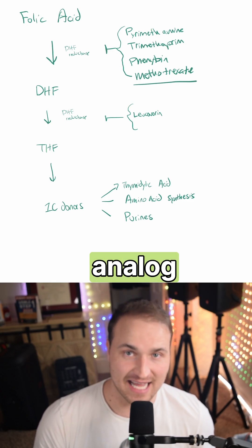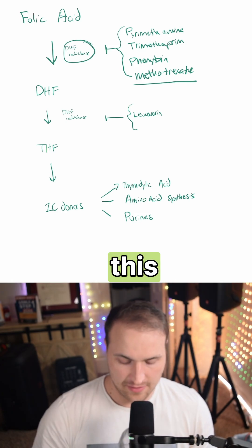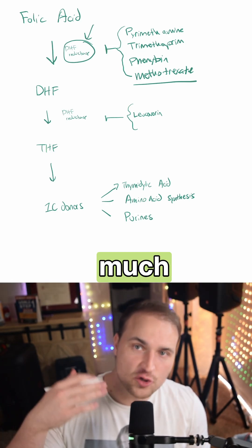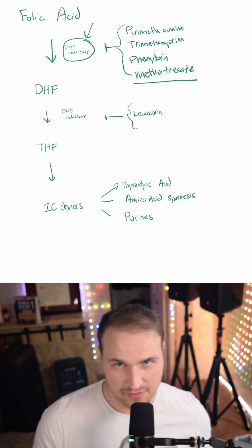methotrexate is a folic acid analog that inhibits dihydrofolate reductase, DHFR, this guy right here. And so if you have rheumatoid arthritis and you take too much of that, you can't generate tetrahydrofolate. And that's required for purine and thiamine synthesis.